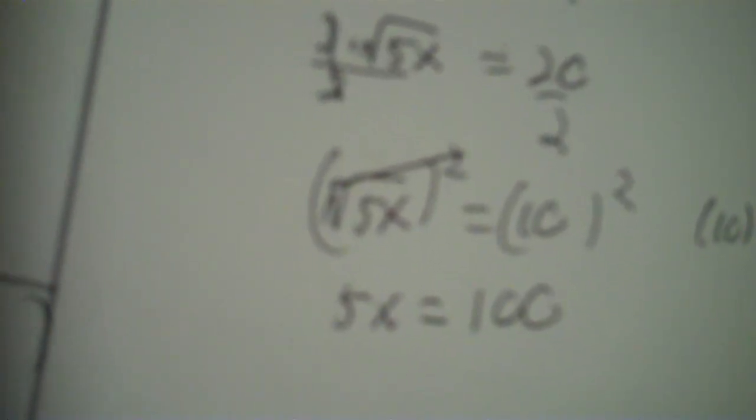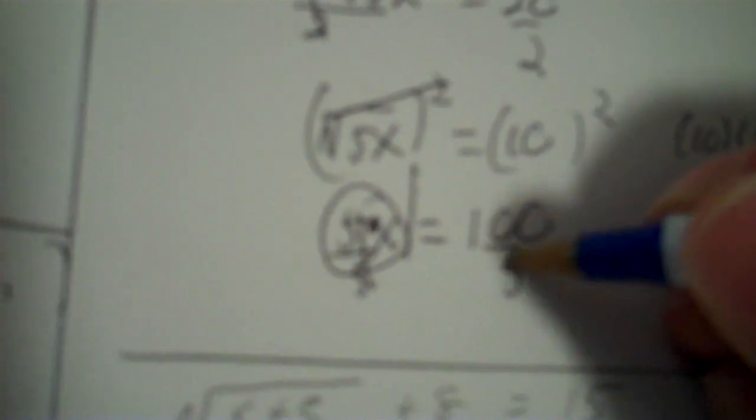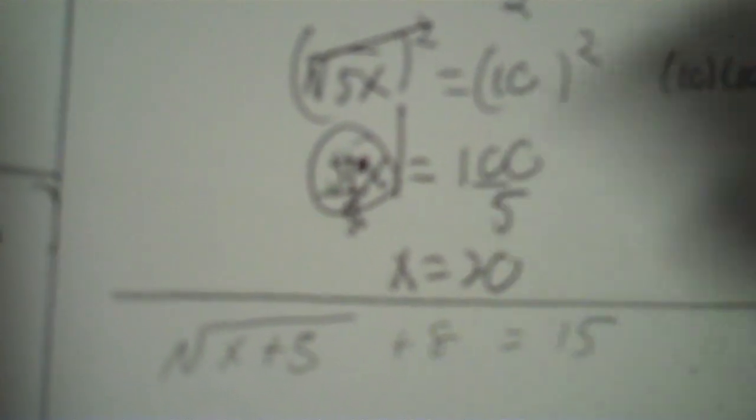Now solve for x. I've got x only in the equation, so that's linear properties, so there's one answer. You've got times 5, so you just need to divide by 5, and that gives me my answer: 100 divided by 5 equals 20. There's your answer.